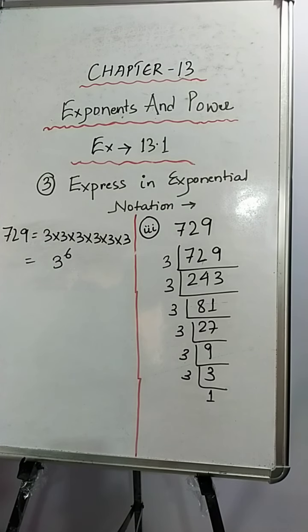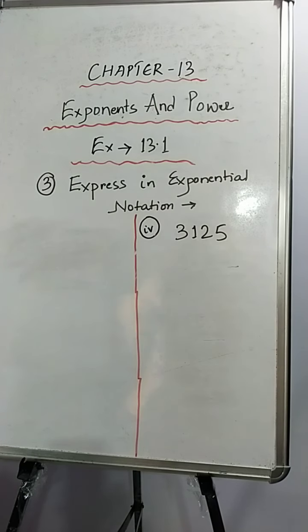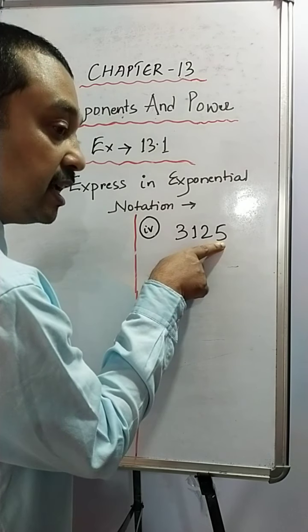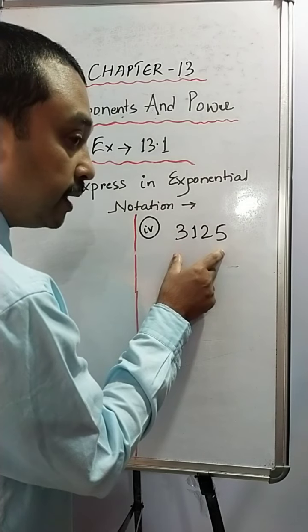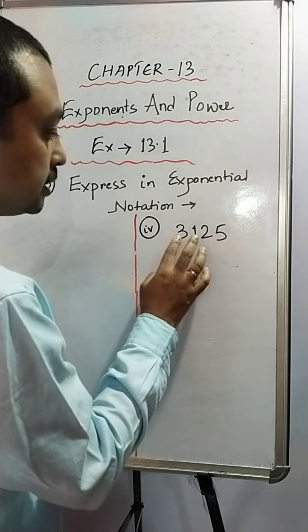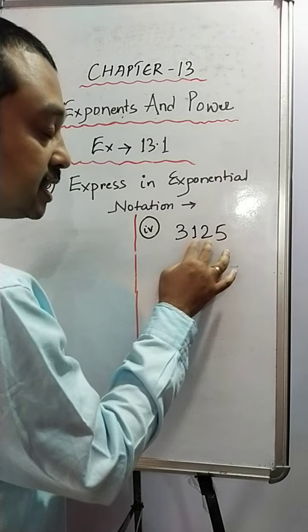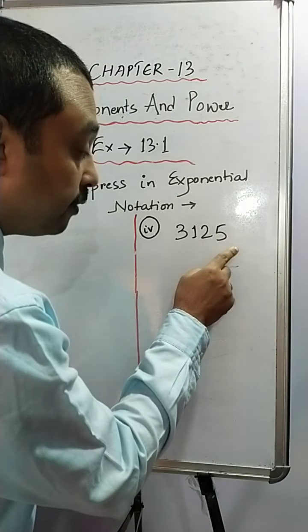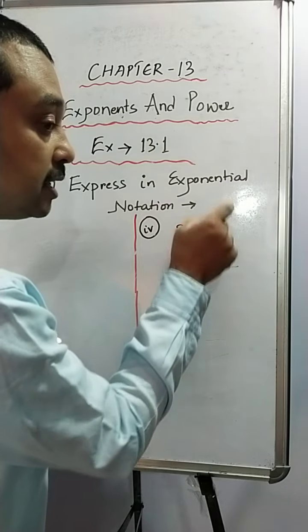Now, let's do sum number 4. Now, this number is not divisible by 2 because the last digit is odd number. Is it divisible by 3? So we have to add all the digits. That is, 3 plus 1 is 4, 4 plus 2 is 6, 6 plus 5 is 11. No, it is not divisible by 3.